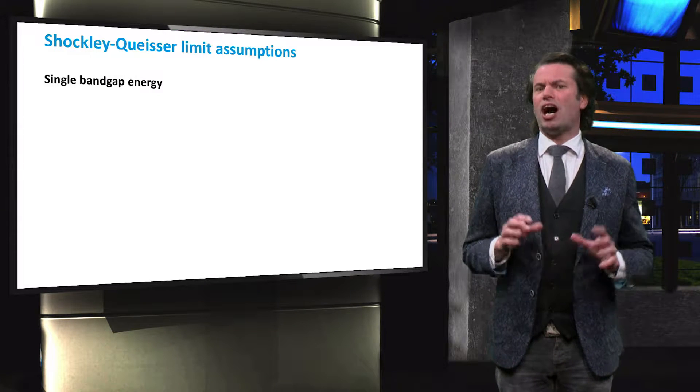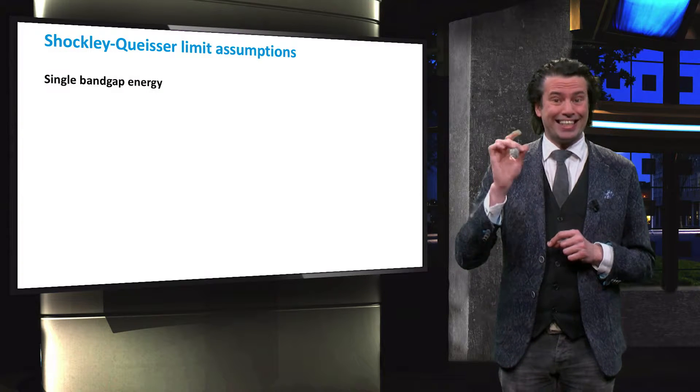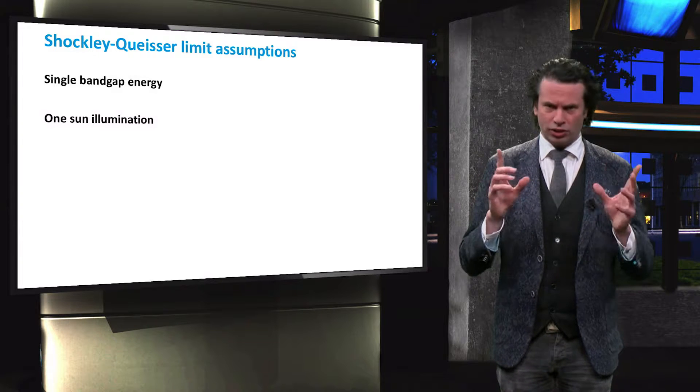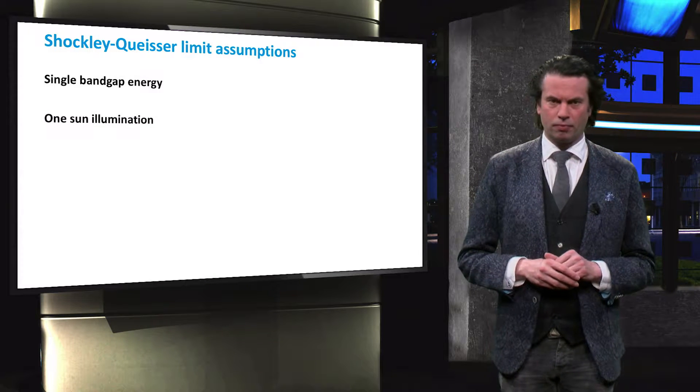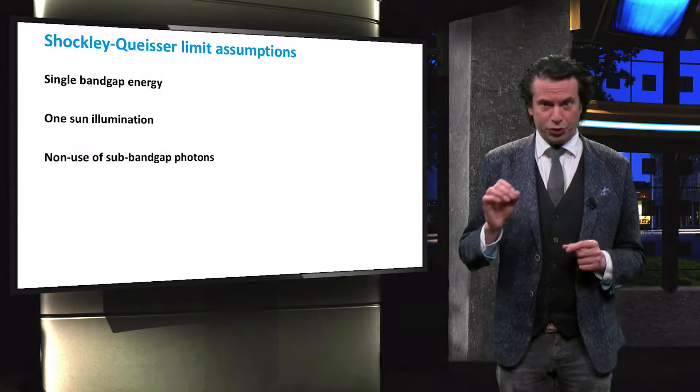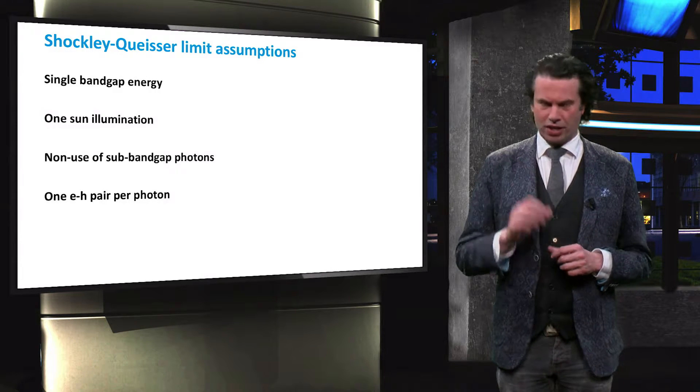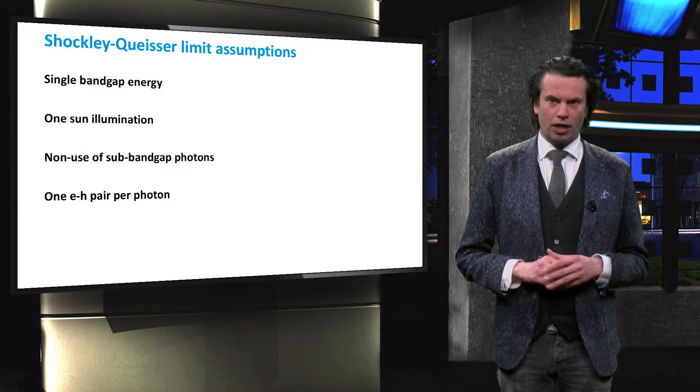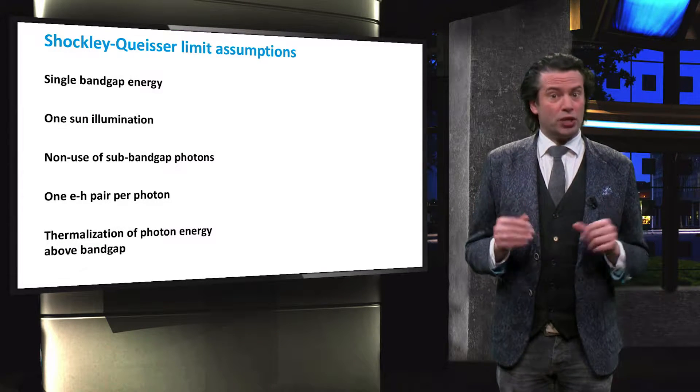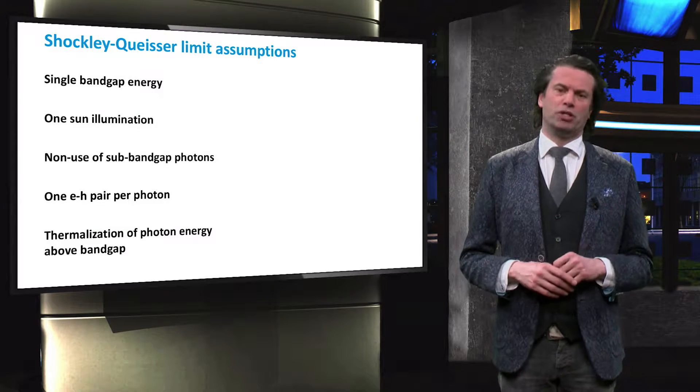Those assumptions are that the solar cell consists of one junction with a single bandgap energy, and that the cell receives one sun illumination. Furthermore, photons with an energy below the bandgap energy are not used, and absorbed photons can only generate one electron-hole pair. Finally, the Shockley-Queisser limit assumes that photons with an energy greater than the bandgap energy lose their excess energy due to thermalization.